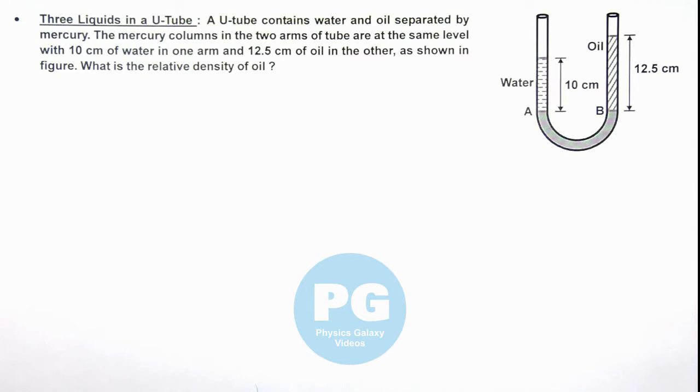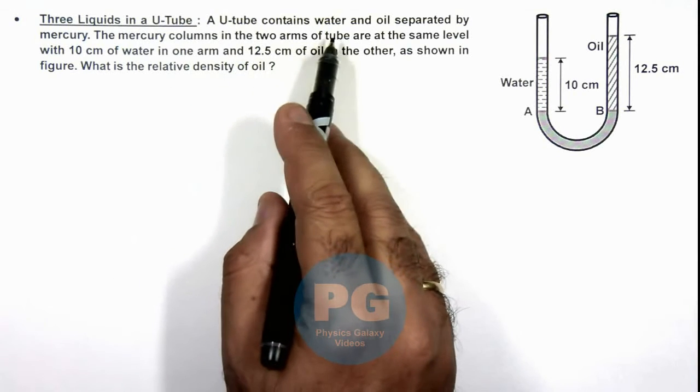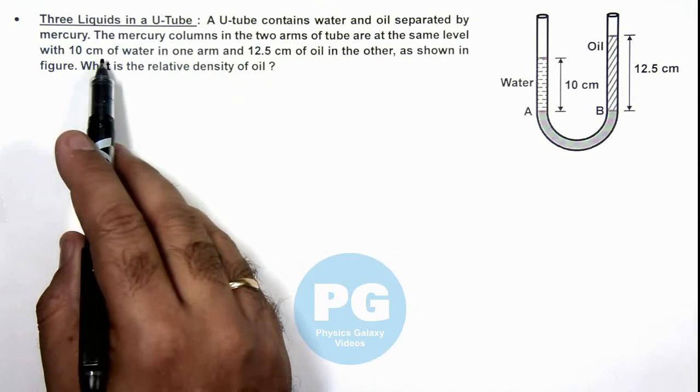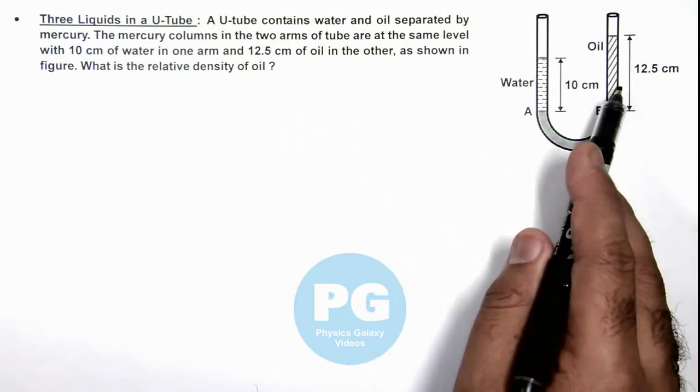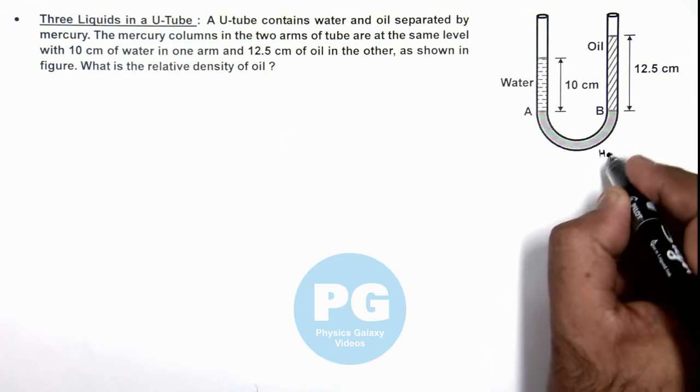In this illustration, we'll analyze 3 liquids in a U-tube. We are given that a U-tube contains water and oil separated by mercury. Here you can see this is water, this is oil, and this would be the mercury.